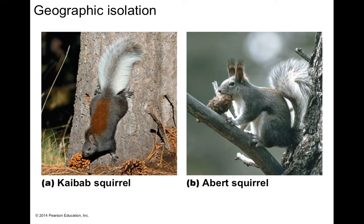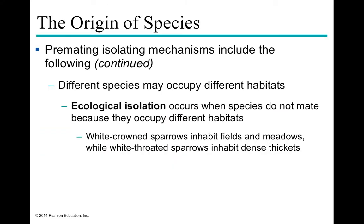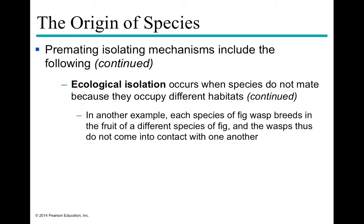An example of geographic isolation: two squirrels live in the same habitat, but one lives mainly on the ground and the other mainly in the branches. Even though they could possibly interbreed, they're never in the same location within the habitat at the same time. Ecological isolation, by contrast, occurs when organisms occupy two different habitats within the same region — for example, white-crowned sparrows inhabit fields and meadows, while white-throated sparrows inhabit dense thickets, so they're never in the same microhabitat.